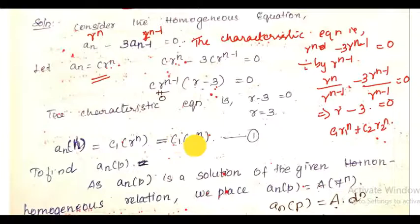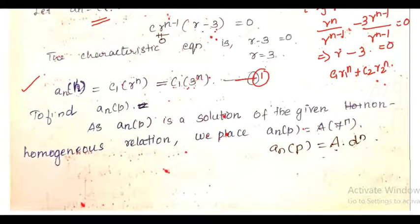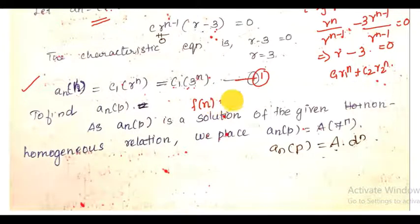So the homogeneous solution is a(n)_h = c1·3^n. Now we need to find the particular solution. The given function f(n) = 5·7^n.